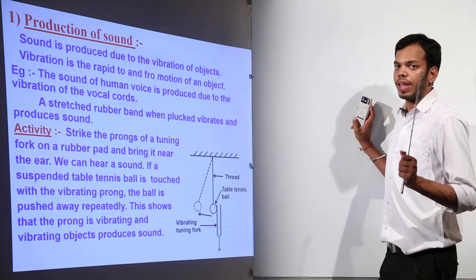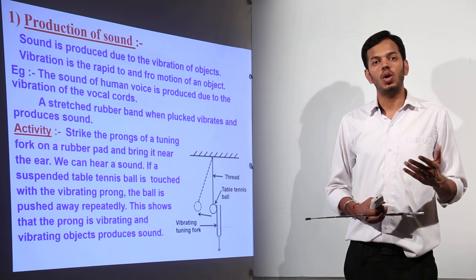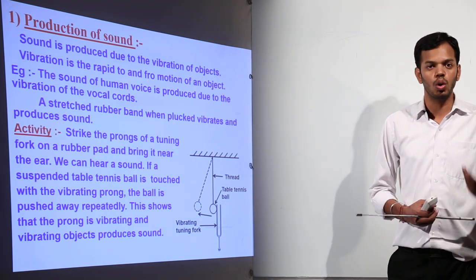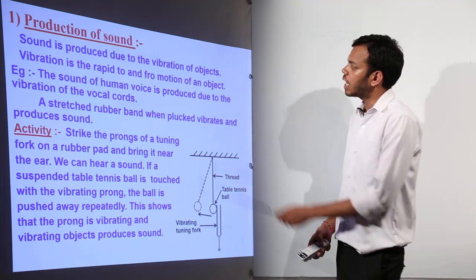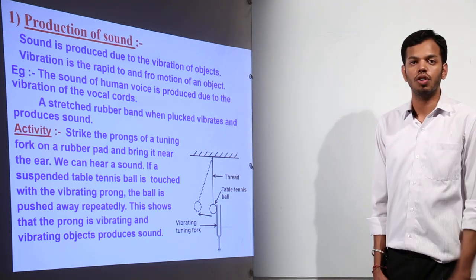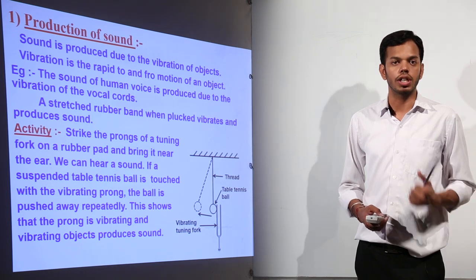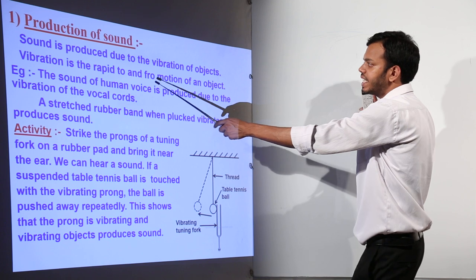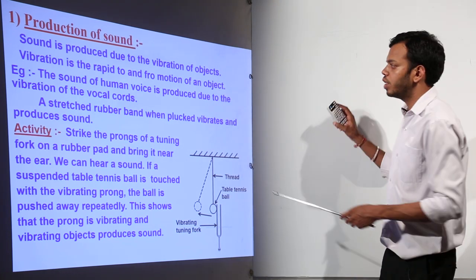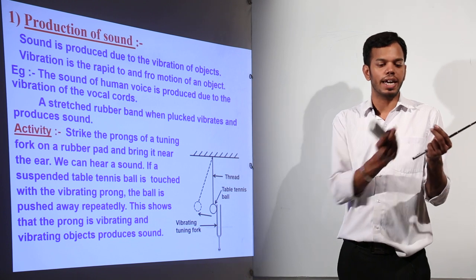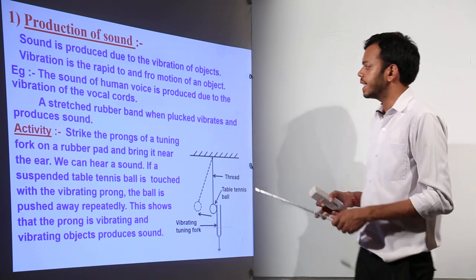Sound is produced due to vibration of objects. I want you to note all the key points of this chapter because it is very much a theoretical chapter — make your own notes. Right now I'm speaking and you are listening; the sound is coming from the vibration of my vocal cords. Vibration is the rapid to-and-fro movement. You can take a rubber band, stretch it, and have someone pluck it from the center — you will hear sound, showing that vibrations produce sound.